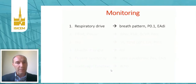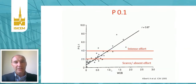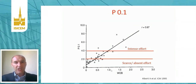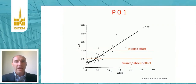To monitor respiratory drive, besides breathing pattern, we can use electrical activity of the diaphragm and P0.1. P0.1 is extremely simple because it is displayed on basically all commercially available ventilators. It is the negative deflection of airway pressure during the first 100 milliseconds of an inspiratory effort against the occluded airway, so it is related only to the drive of the patient, not to muscular force. It is linearly related with the work of breathing and with respiratory muscle oxygen consumption. The target of P0.1 during assisted modes of ventilation is between 2 and 3–4 cmH2O.